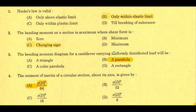Hook's Law is valid only within the elastic limit — that is option B. But what is Hook's Law? Hook's Law states that stress is directly proportional to strain within the proportionality limit. So the linear relationship of stress and strain exists up to the limit of proportionality.